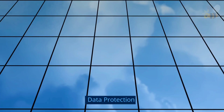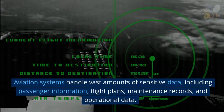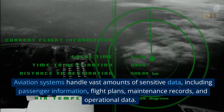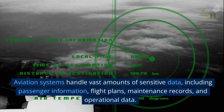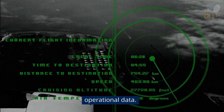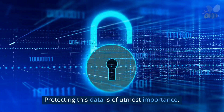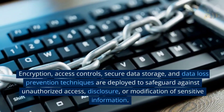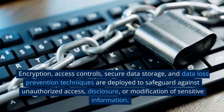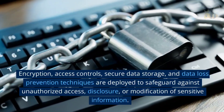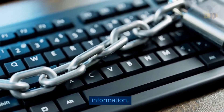Data Protection. Aviation systems handle vast amounts of sensitive data, including passenger information, flight plans, maintenance records and operational data. Protecting this data is of utmost importance. Encryption, access controls, secure data storage and data loss prevention techniques are deployed to safeguard against unauthorized access, disclosure or modification of sensitive information.